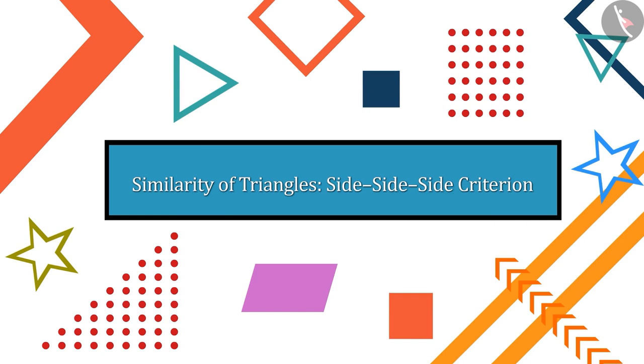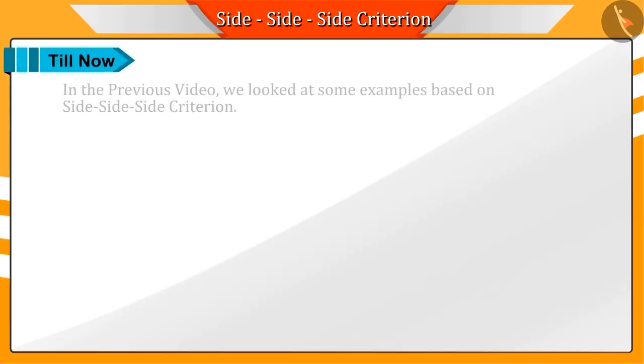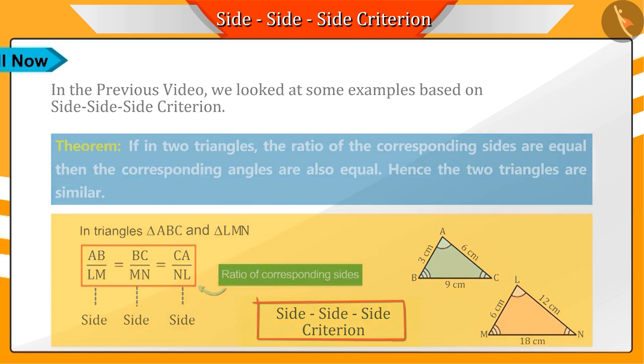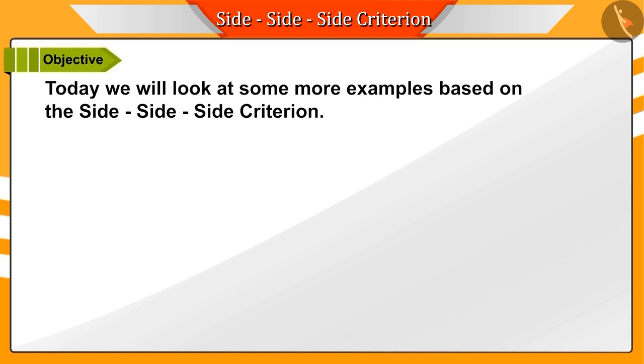Welcome to this video. In the previous video, we looked at some examples based on the side-side-side criterion for similarity of triangles. Today, we will look at some other examples based on the side-side-side criterion.